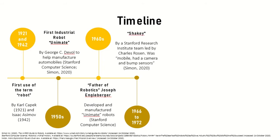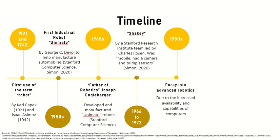The next milestone was the invention of the robot Shakey by a team from the Stanford Research Institute led by Charles Rosen, from 1966 to 1972. Shakey was mobile, had a camera and bump sensors, and could respond to its surroundings. In the 1980s, due to the increased availability and capabilities of computers, the field of robotics began to grow quickly and many firms began their foray into advanced robotics.